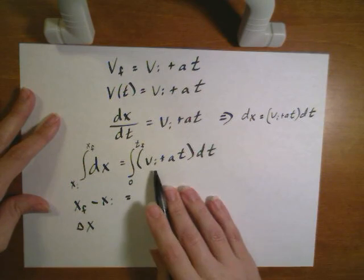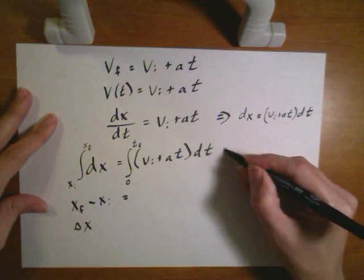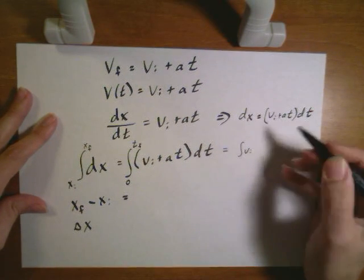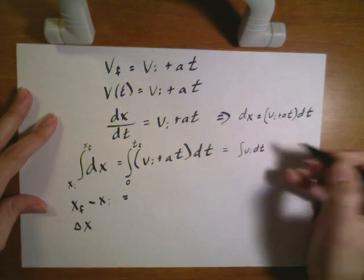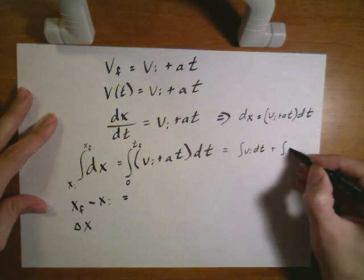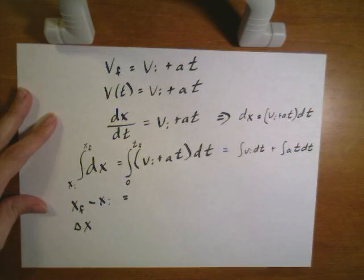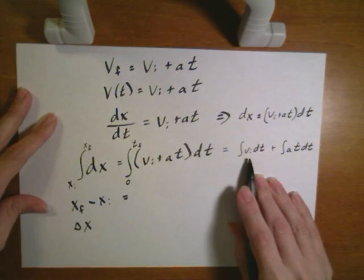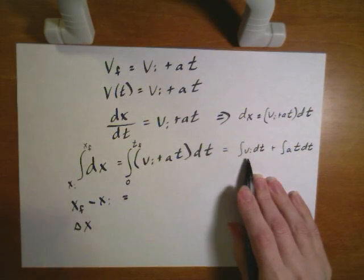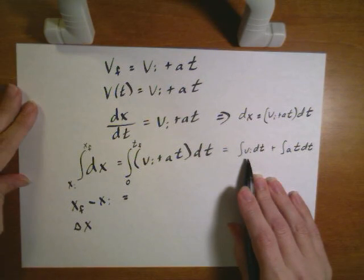Over here we can look at the fact that we really have two terms. The integration of v_i dt plus the integration of a t dt over the same limits.